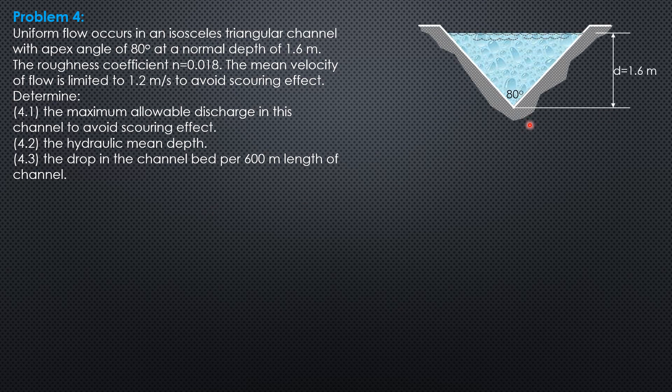So this is the section to help analyze the problem. We draw a vertical line through the vertex so that this is 1.6 tangent of 40. Tangent 40 is opposite over 1.6, so 1.6 tangent of 40.